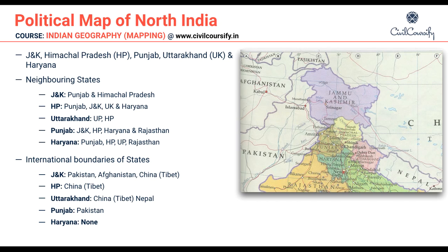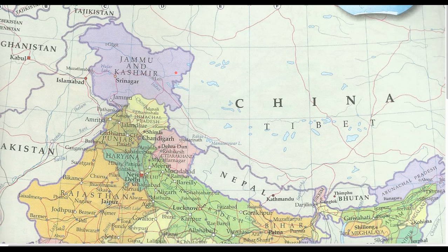Now let's look at the magnified view of the North India map. The states we are concerned with are Jammu and Kashmir, Himachal Pradesh, Uttarakhand, Haryana, and Punjab. Jammu and Kashmir has its capital at Srinagar, territorial boundaries with Punjab and Himachal Pradesh, and international boundaries with Pakistan, Afghanistan, and China.